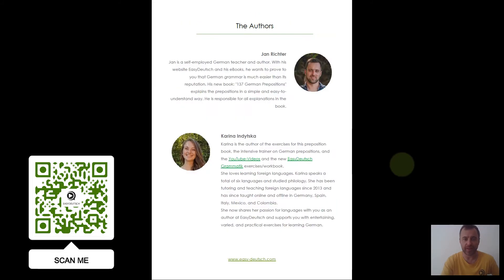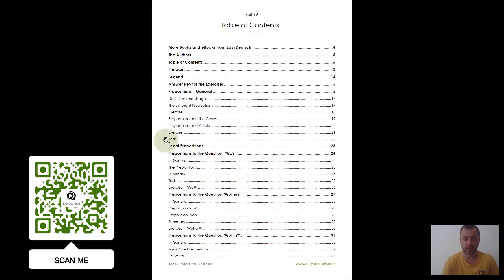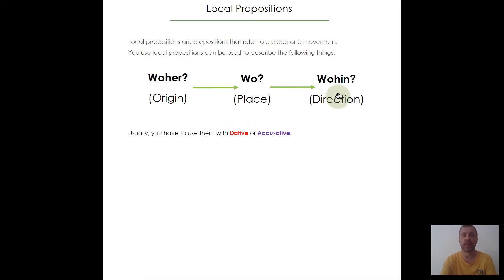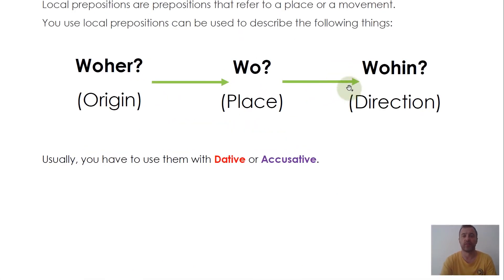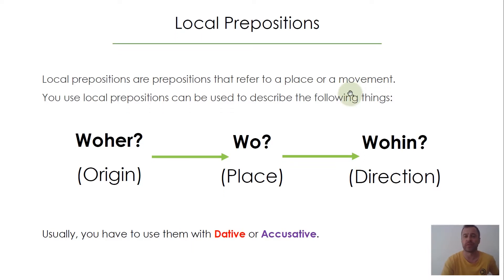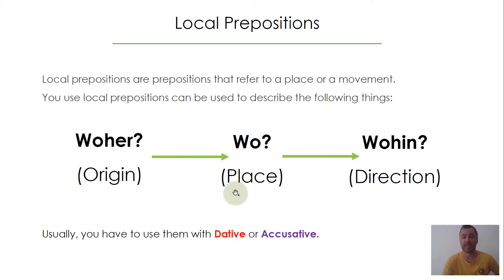Today's topic is local prepositions. In general, there are three different types of local prepositions. We can always ask about an origin with woher — where from. And we can ask about a place with wo — where.